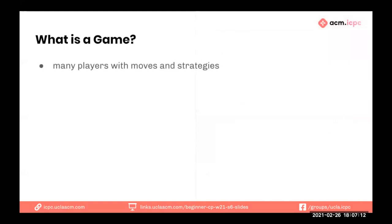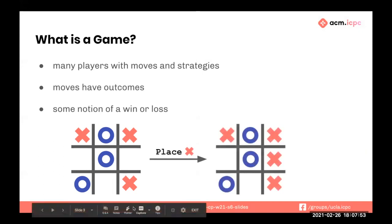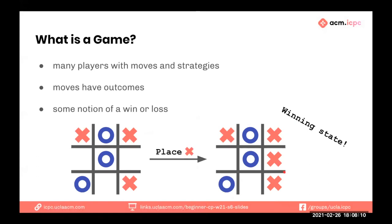So what is a game? Think of the most basic thing you know. You need some players with moves and strategies, those moves have outcomes that make progress, and there's some notion of a winner or loss. For example, in tic-tac-toe, a player with the X piece can place it, transitioning the board to a new state — and it turns out that placing three crosses horizontally, vertically, or diagonally is a winning state.